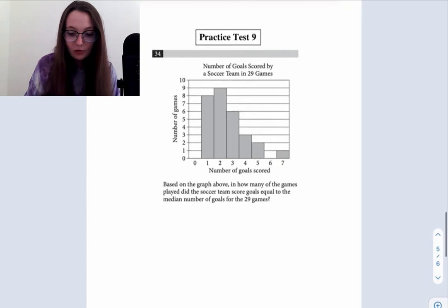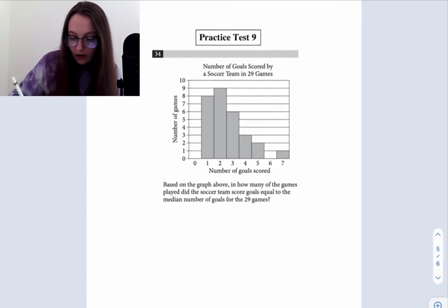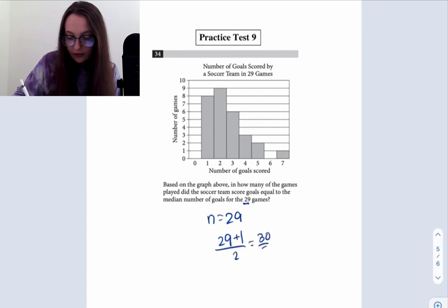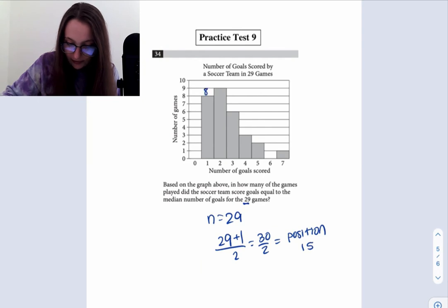Now let's talk about how to do this for graphs. We know that there are 29 games, so n equals 29. 29 plus one over two gives us 30 over two. So the median is going to fall at position 15. There are eight positions here, so this is positions one through eight. At two goals scored, there are an additional nine positions, so this is positions nine through 17. Position 15 is going to fall within this range, which is two goals scored. So the median is two goals.